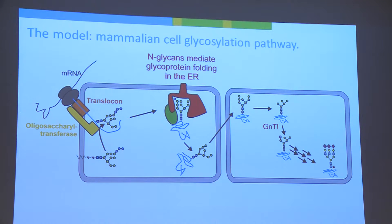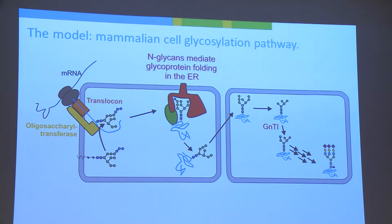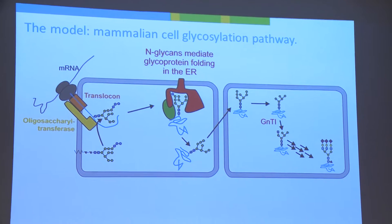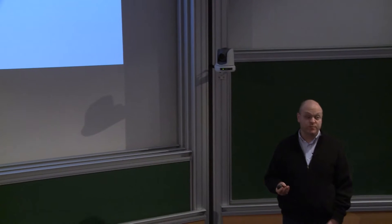Some of these carbohydrates recruit proteins like calnexin and calreticulin to the folding protein, bringing protein disulfide isomerases that assist in resolving inappropriately formed disulfide bonds. If you remove glycans by mutating the attachment sequence, many proteins will simply not fold anymore in eukaryotic cells. This is also one of the main reasons why so many proteins do not fold in E. coli, which does not have this machinery at all. That's why the biotech industry needs eukaryotic expression systems — it is the single most important reason.